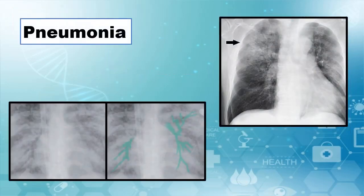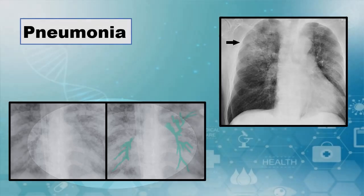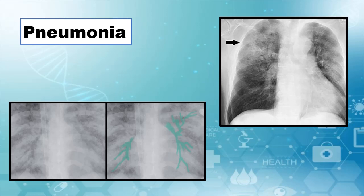In pneumonia we will find consolidation and air bronchogram. The presence of an air bronchogram indicates that the density is in the alveoli and not the large airways. A good tip for discerning between pneumonia and a solid mass is that vessels passing through a mass get distorted, in opposition to pneumonia consolidations, where vessels run through the consolidation intact.